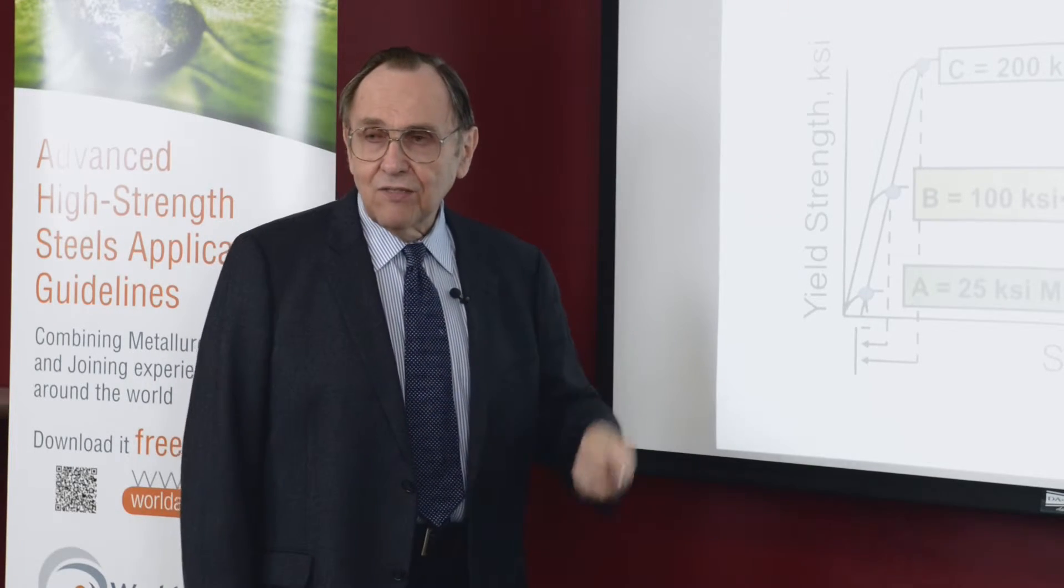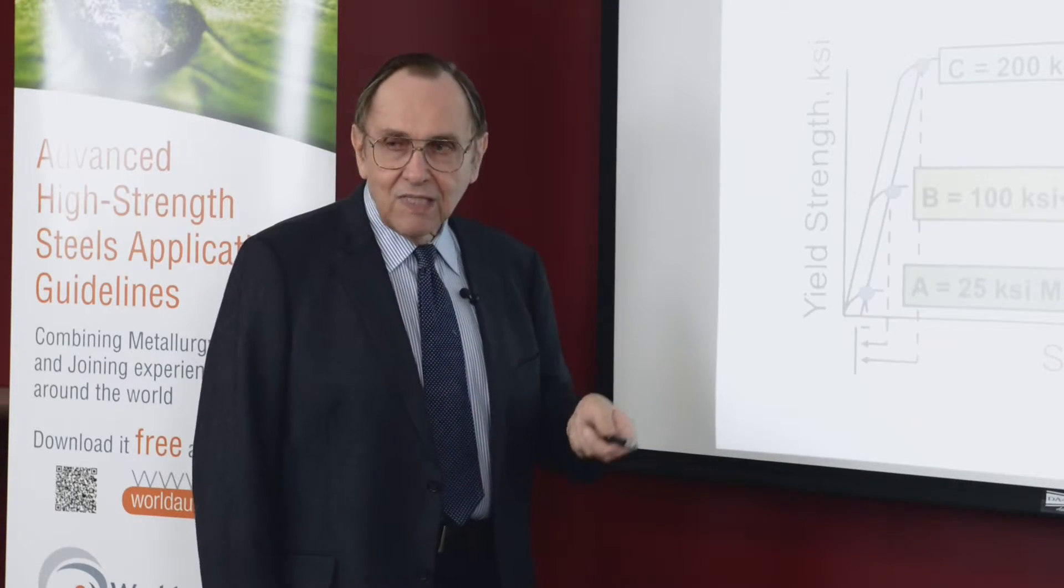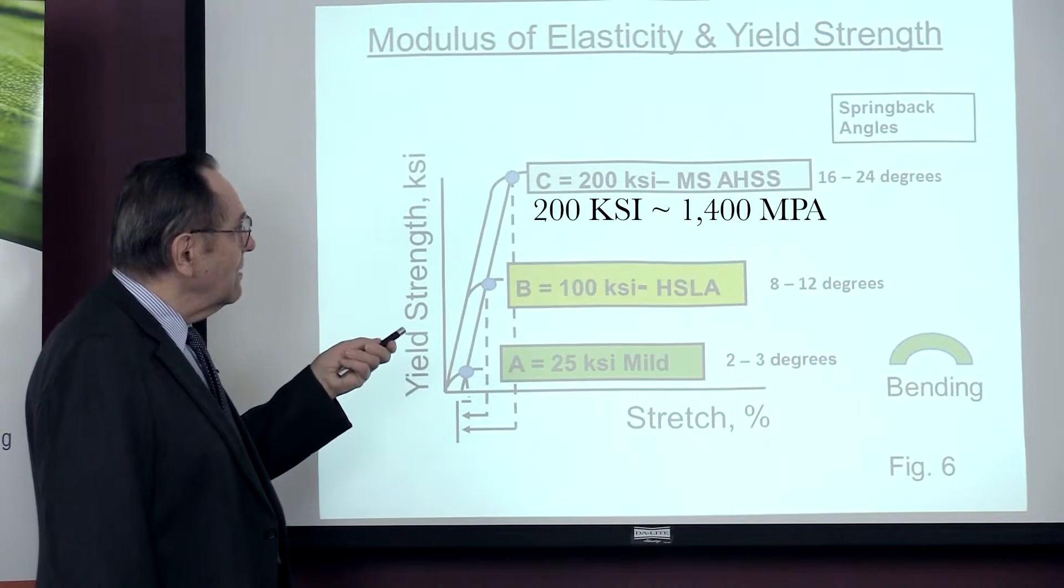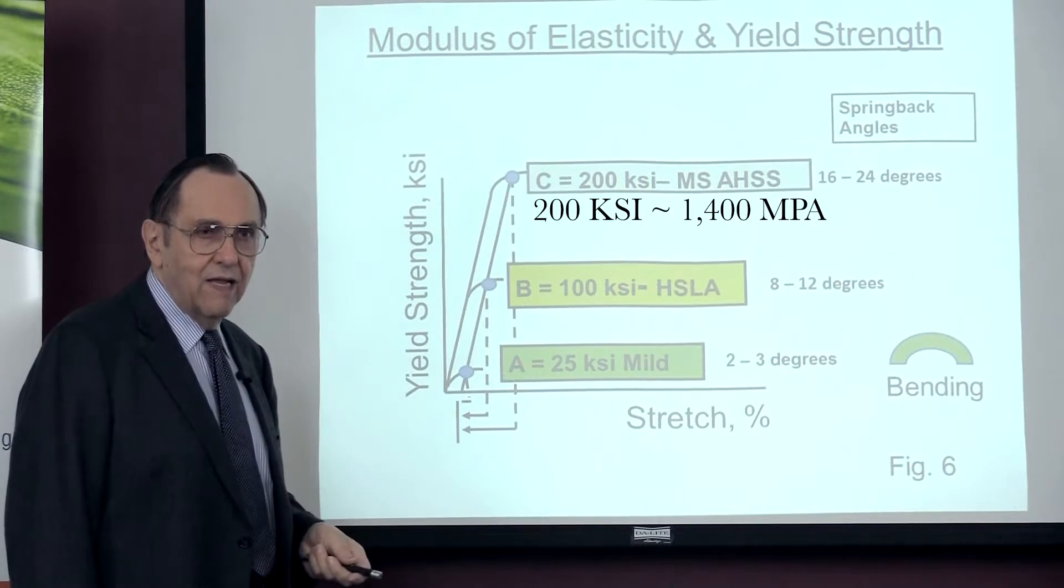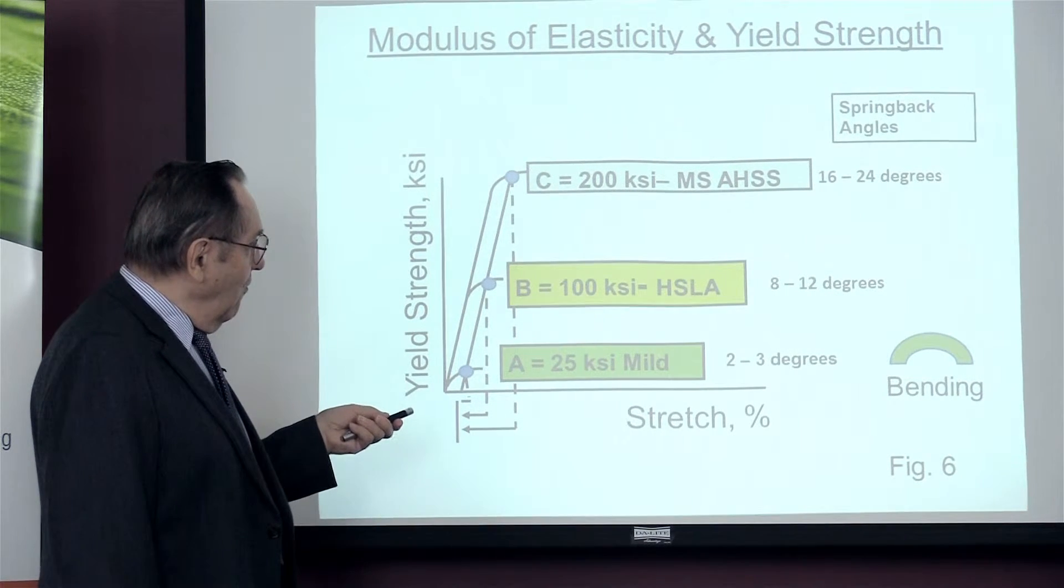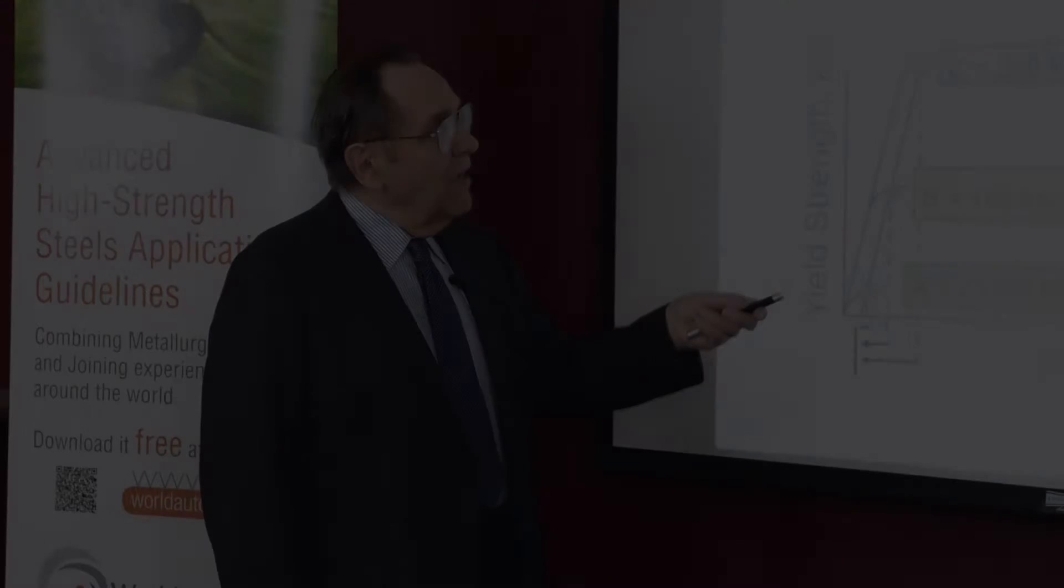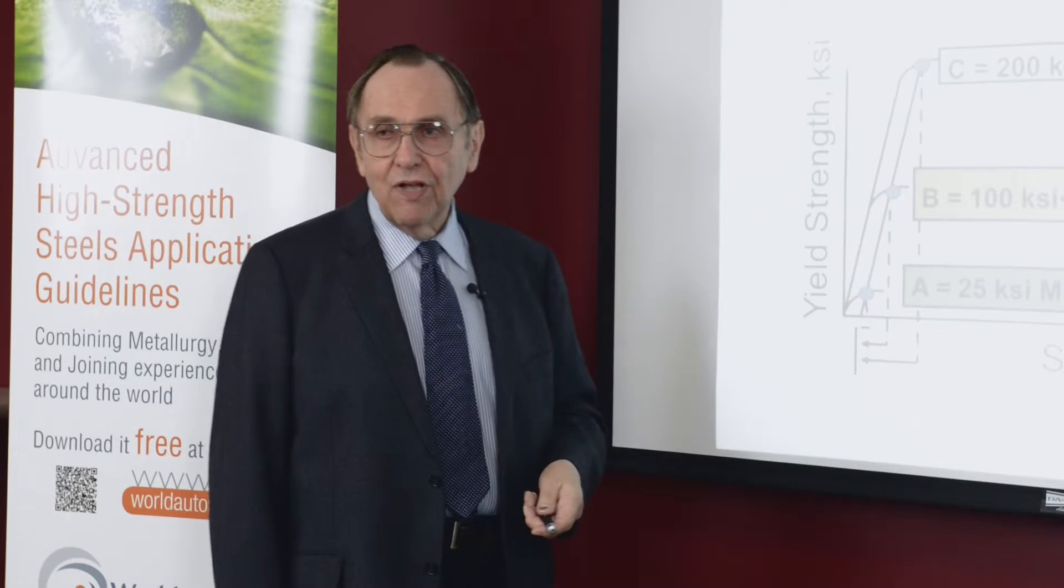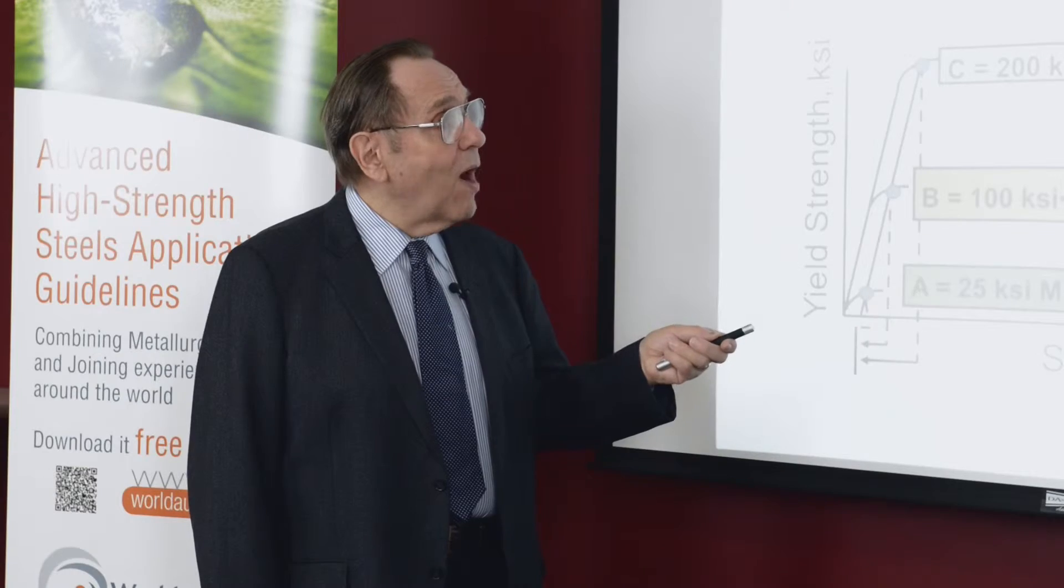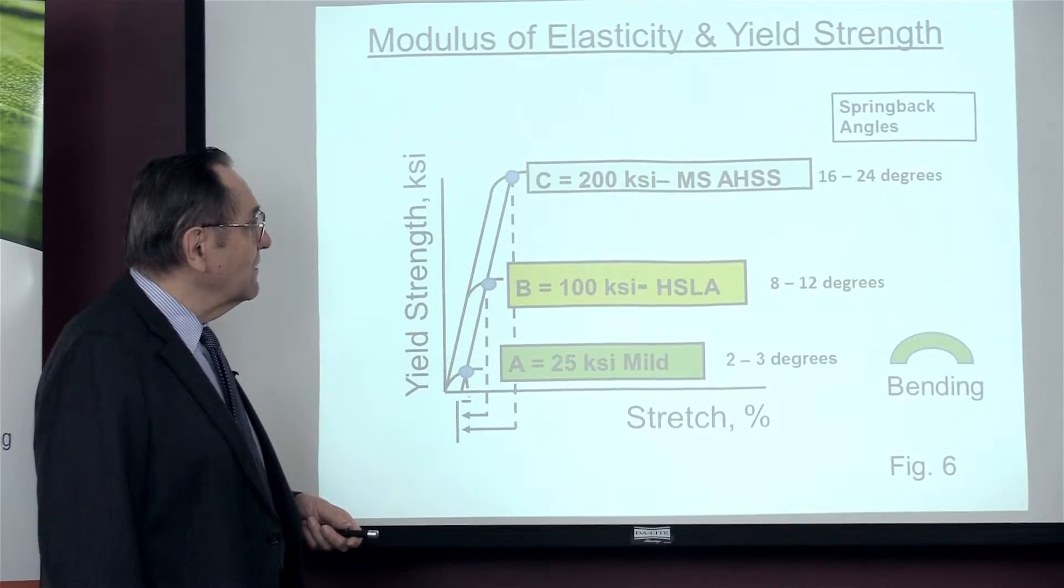Now comes the advanced high strength steels, which, number one, is the martensite, the martensitic steels, which in this case has a yield strength of 200 ksi, very, very strong. And now this is four times, eight times what you would find with a mild steel. And you're having 16 to 24 degrees of potential bending and springback. That is a tremendous problem that you have in creating a stamping to specification.